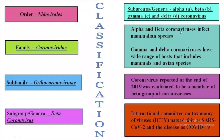Alpha and beta coronaviruses infect mammalian species, while gamma and delta subgroups infect mammal and bird species. The coronavirus reported at the end of 2019 was confirmed to be a member of the beta group. Based on this information, the International Committee on Taxonomy of Viruses (ICTV) named this virus SARS-CoV-2, and the disease caused by it is named COVID-19, where 19 represents the year 2019.